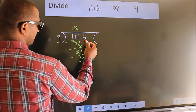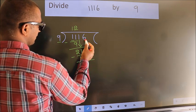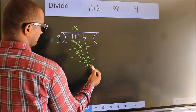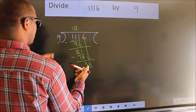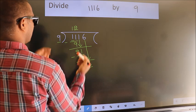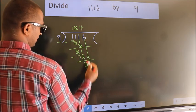After this, bring down the beside number. So 6 down. So 36. When do we get 36? In 9 table. 9 fours, 36.